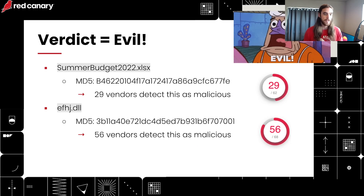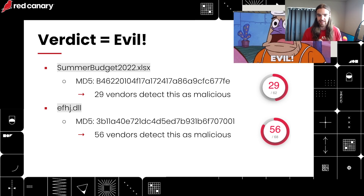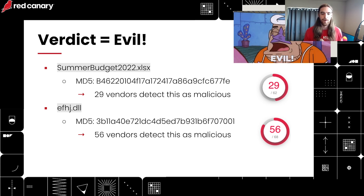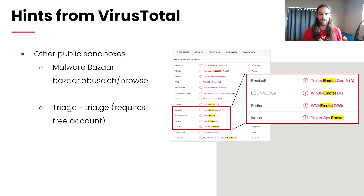We take it to the next step and look at Summer Budget 2022 and efj.dll — and it's very clear that they are malicious. We have 29 of 62 vendors and 56 of 68 vendors flagging those files. We can with fairly high confidence say we have a threat here. Additionally, when we search on VirusTotal it gives us hints to determine what threat we're actually facing — in this case, Emotet is highlighted in a number of the vendor detections, giving us a very good hint that we're very likely dealing with Emotet.